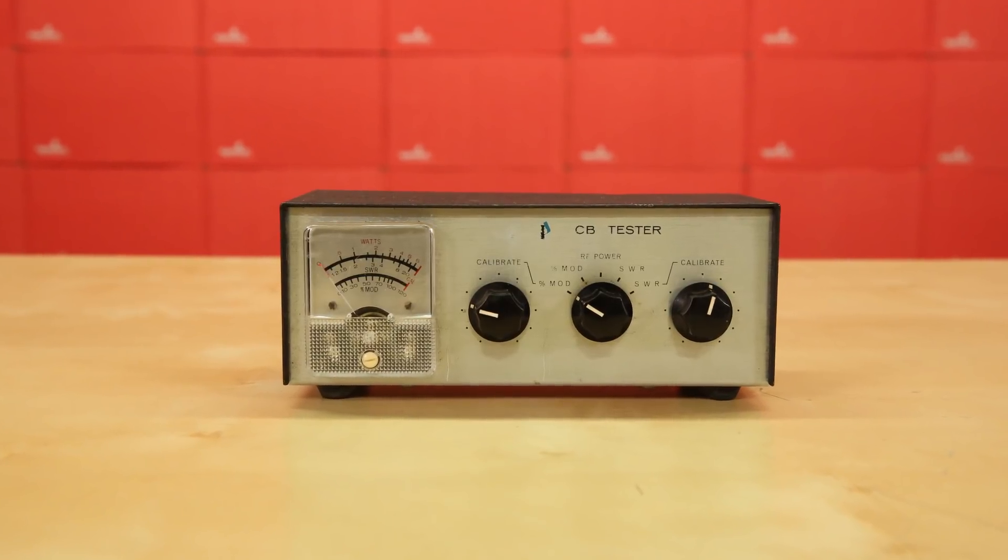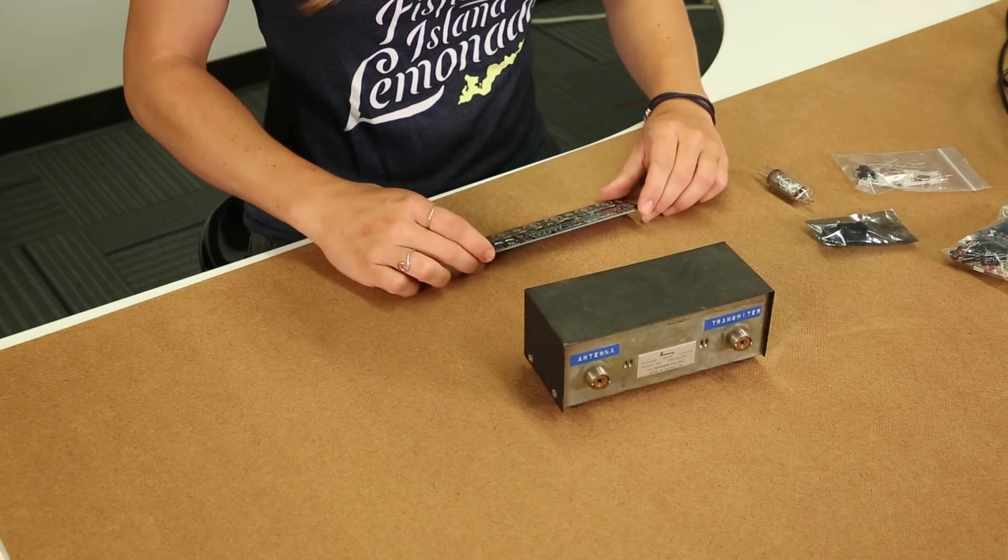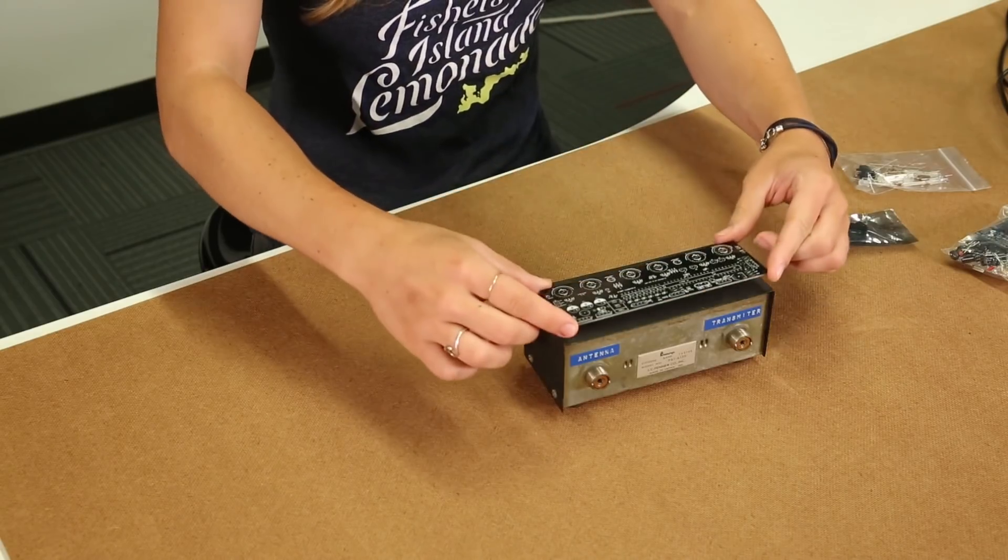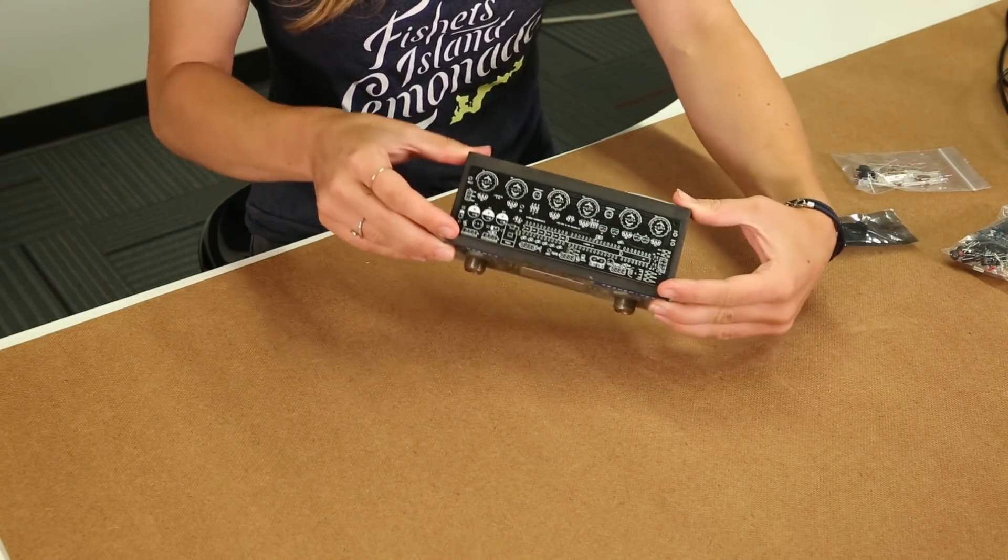It all started when I bought this old CB radio tester off eBay. I thought it would be a really cool base for a Nixie tube clock, so I bought a kit and tubes off eBay as well from some sellers in Eastern Europe.